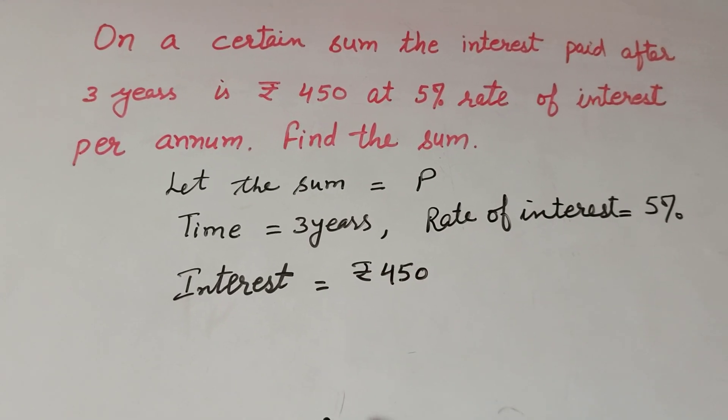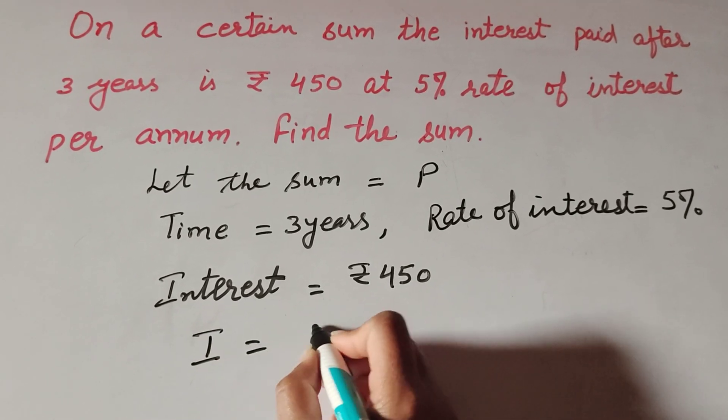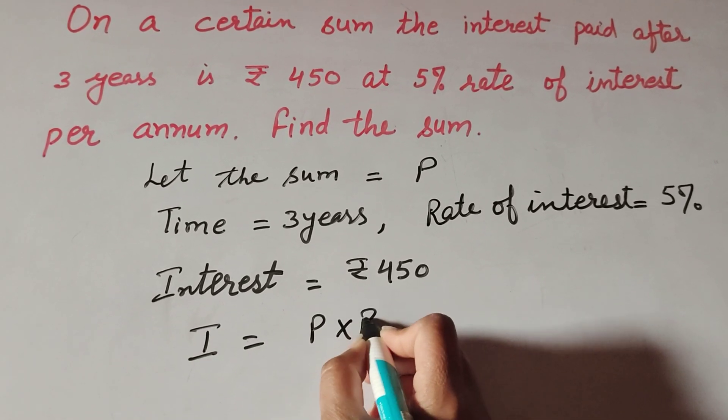We know the formula to find interest: I = PRT/100.